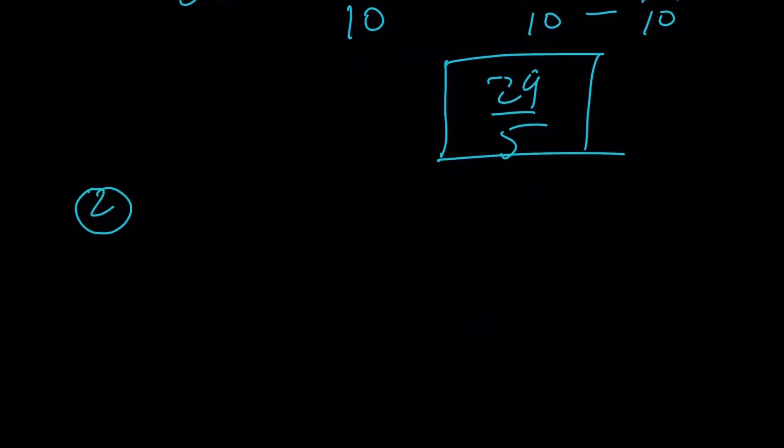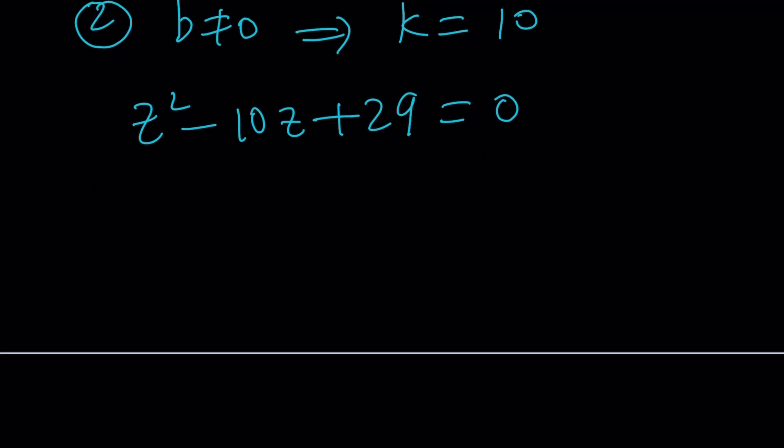Let's go ahead and take a look at the second case. The second case is where b does not equal 0, but where k is equal to 10. Now, if k is equal to 10, our equation becomes z squared minus 10z plus 29 equals 0. And from here, obviously, you can easily solve this equation. The roots are going to be 5 plus 2i and 5 minus 2i, which tells you that the b value is either 4 or negative 4.